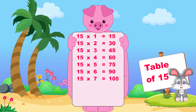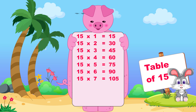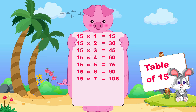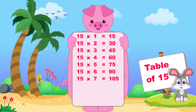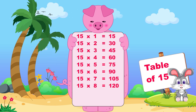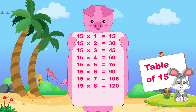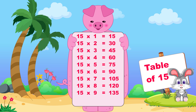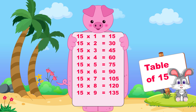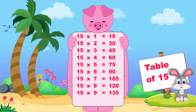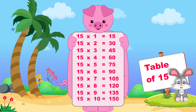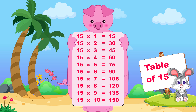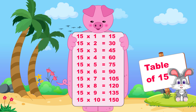Fifteen sevens are one hundred five, fifteen eights are one hundred twenty, fifteen nines are one hundred thirty-five, fifteen tens are one hundred fifty.